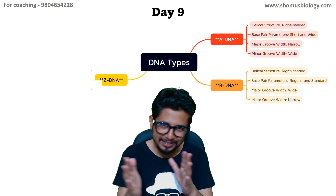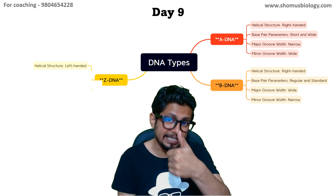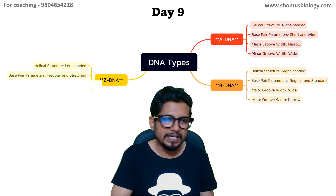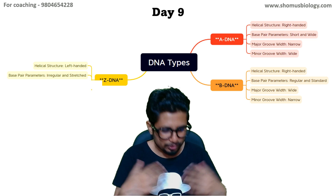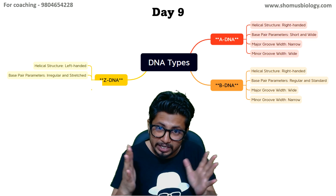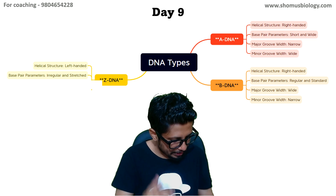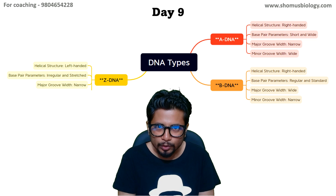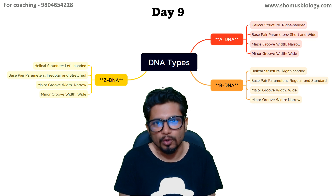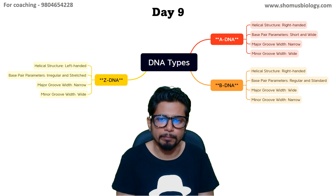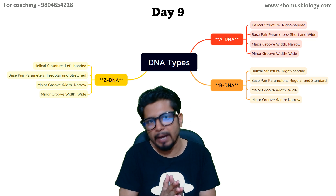Z-DNA is left-handed — the only DNA type that is left-handed. Its base pair parameters are irregular, with no proper regularity; the bases are stretched rather than condensed. The major groove width is narrow and the minor groove is wide, which is a similarity between Z-DNA and A-DNA — both have a narrow major groove and a wider minor groove.